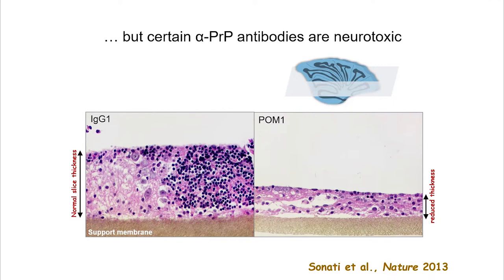This toxicity is completely complement independent. It can be reproduced using FAB fragments and even single-chain FV recombinant fragments — it is a property and consequence of the binding of POM1 to the prion protein.